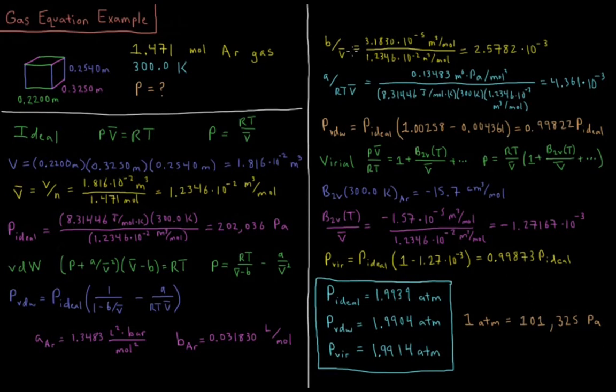So we get B over V-bar is 3.183 times 10 to the minus 5 meters cubed per mole, divided by V-bar, which is 1.2346 times 10 to the minus 2 meters cubed per mole. B over V-bar is 2.5782 times 10 to the minus 3. So our particles only take up an effective volume of about 0.03% of the total volume. Our particles are still quite small relative to the total volume available to them.